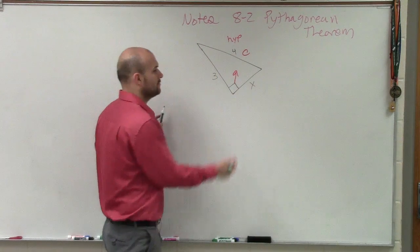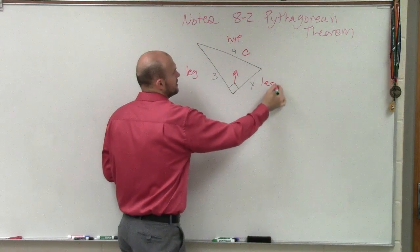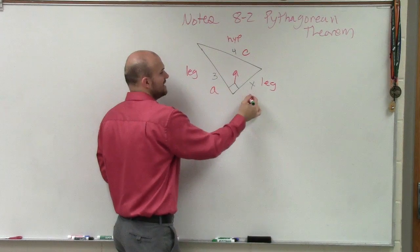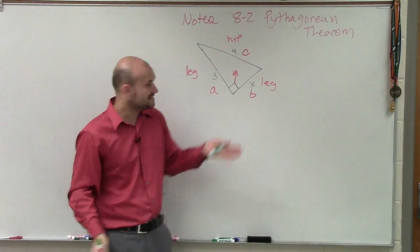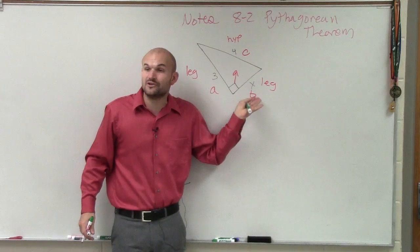And therefore, the other two were what we called our legs. And our legs we labeled as a and b. But in this case, we don't need to label this as b, because we already have it labeled as a. We don't even know the value of it.